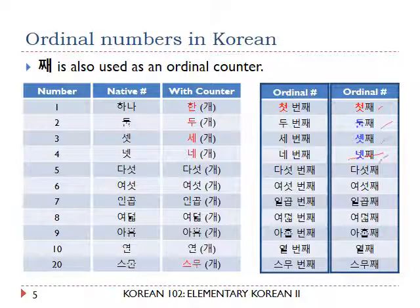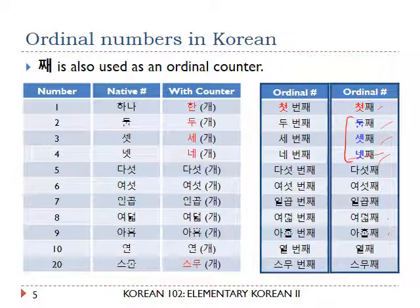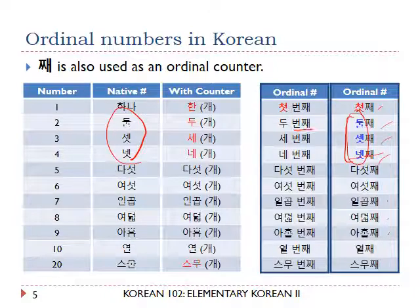So: first, second, third, fourth, 다섯째 (fifth), 여섯째, and so forth. But you have to be careful. With the counter 째, the form of the native number for second, third, and fourth is the same as the isolation form. But when the counter is 번째, the form of the native number — second, third — is the same as the counter-followed form.